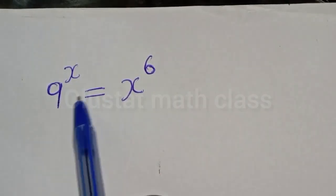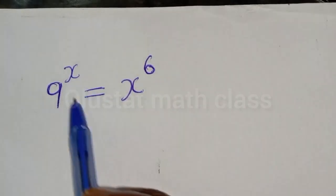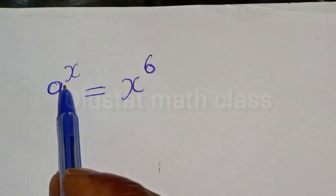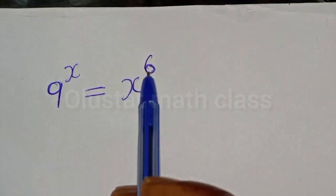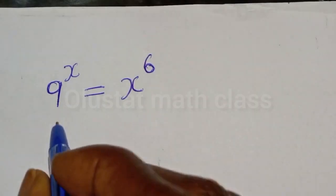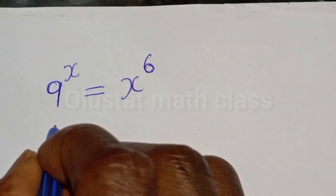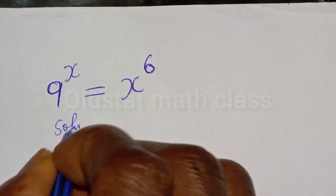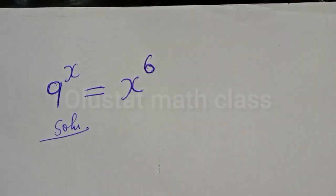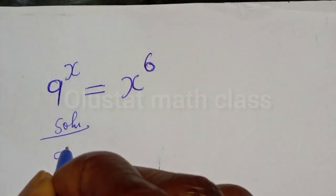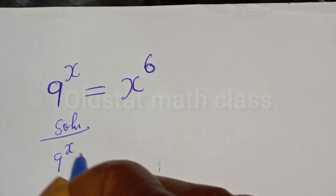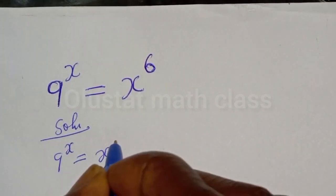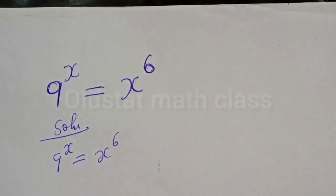Hello, how to solve for s from this given math problem. 9 raised to power s is equal to s raised to power 6. Solution: 9 raised to power s is equal to s raised to power 6.